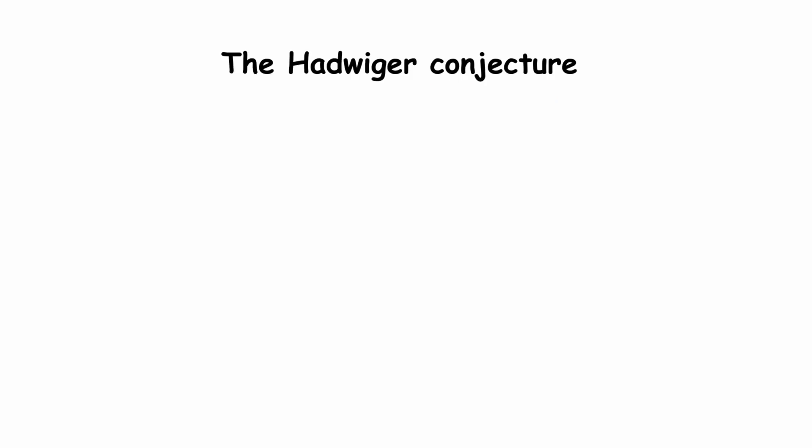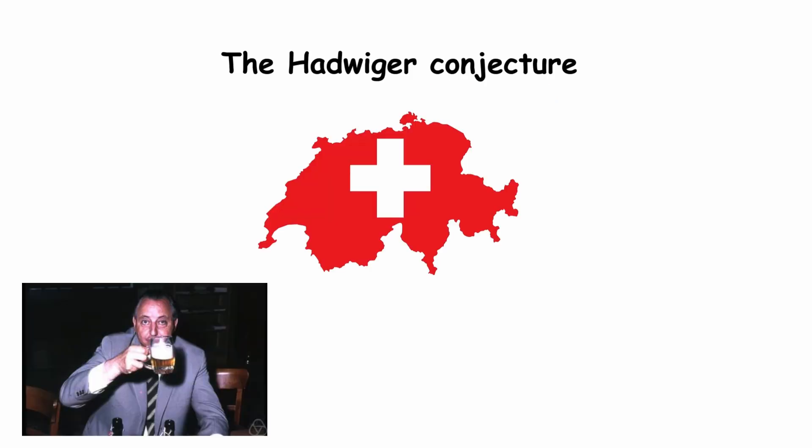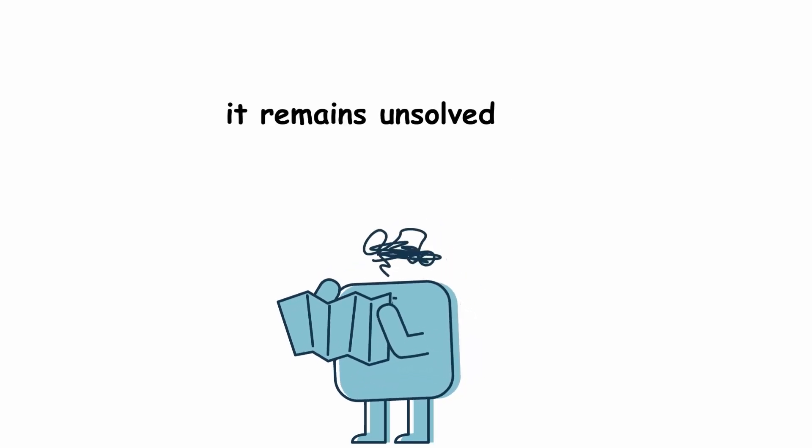The Hadwiger conjecture was proposed by Swiss mathematician Hugo Hadwiger in 1943, and it remains unsolved today.